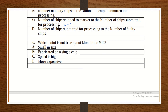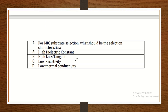Which point is not true about monolithic IC? Options include: it is small in size, fabricated on a single chip, more expensive than hybrid. For MIC substrate selection, the criteria include loss tangent and substrate dielectric constant. These are the minimum requirements for any MIC.